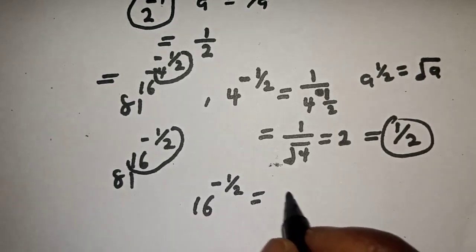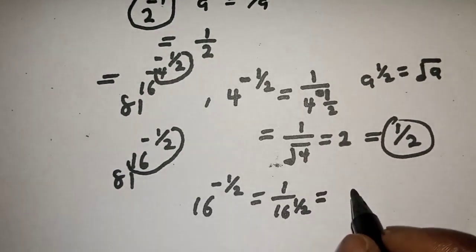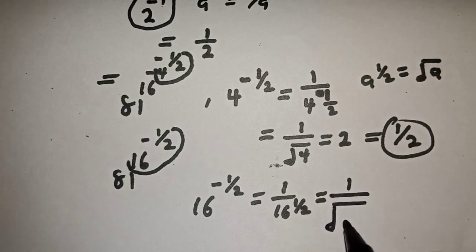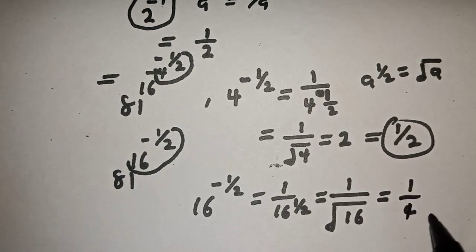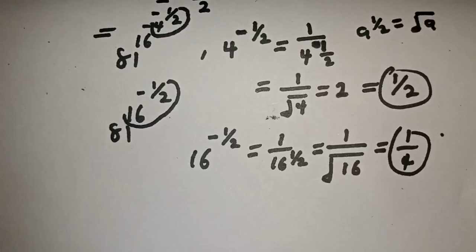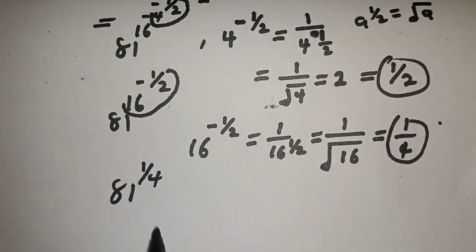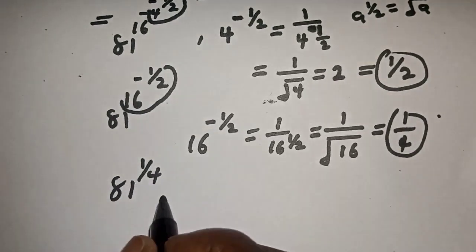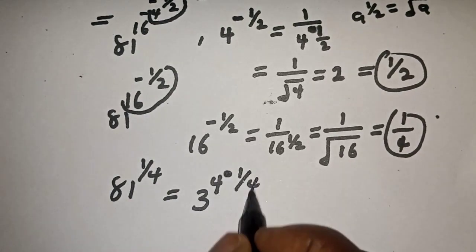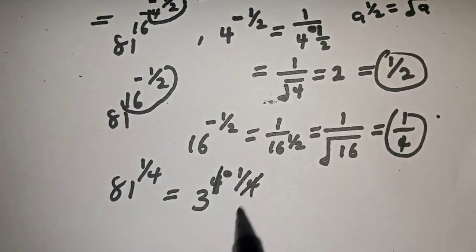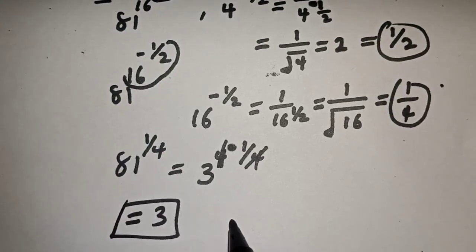Substituting back, we get 16 raised to power 1 over 2, which is equal to 1 over 4. Then we have 81 raised to power 1 over 4. But 81 raised to power 1 over 4 is equal to 3 raised to power 4 multiplied by 1 over 4, which gives us 3 raised to power 1, equal to 3.